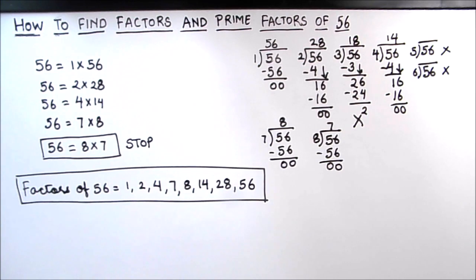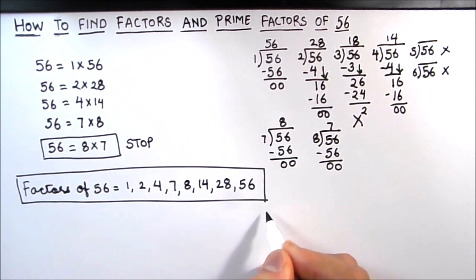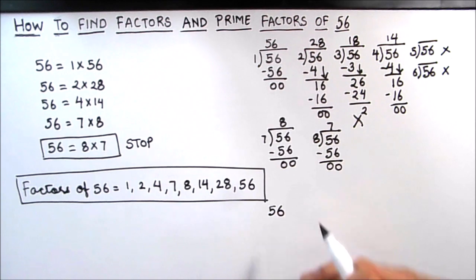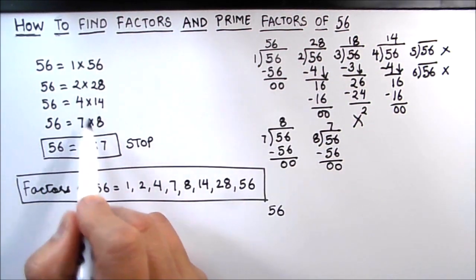Now let's find the prime factors of 56. So prime factors are factors which are prime numbers, so let's make the factor tree for 56 here. First we'll write 56, and we can write 56 as product of any of the two factors here. So let's take 2 times 28. As 2 is a prime number, we are going to circle 2, and 28 can be written as the product of 2 times 14.